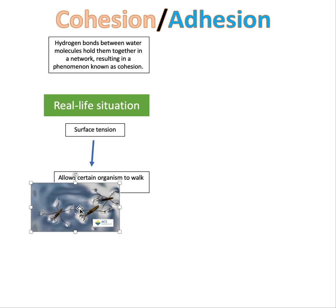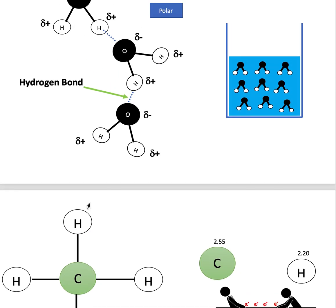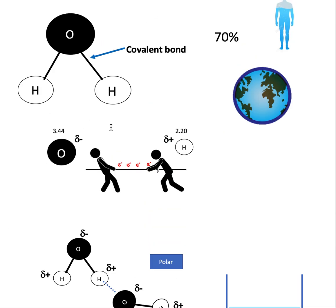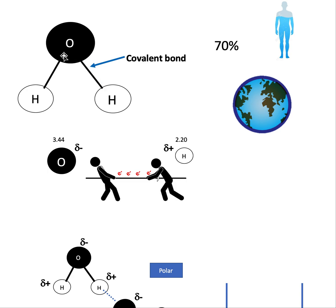Obviously humans can't walk on water because we're too heavy and we'll easily break the hydrogen bonds between water molecules. When you're swimming, you don't actually break the bonds inside a water molecule — you break the hydrogen bonds between water molecules, separating them. Those hydrogen bonds are strong, but not as strong as the covalent bond that holds oxygen and hydrogen together inside a water molecule.